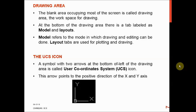The UCS icon stands for user coordinate system icon. When drawing 2D drawings it appears as X and Y axes, showing the positive direction of each axis. When drawing 3D drawings it appears as X, Y, and Z — three axes.